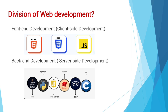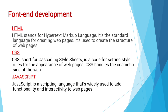In back-end development we can use different kinds of languages — some of the main ones are Python, Java, JavaScript, Ruby, PHP, etc. Nowadays we can even use JavaScript on both sides: on the front-end we can use React.js, and on the back-end we can use Node.js.